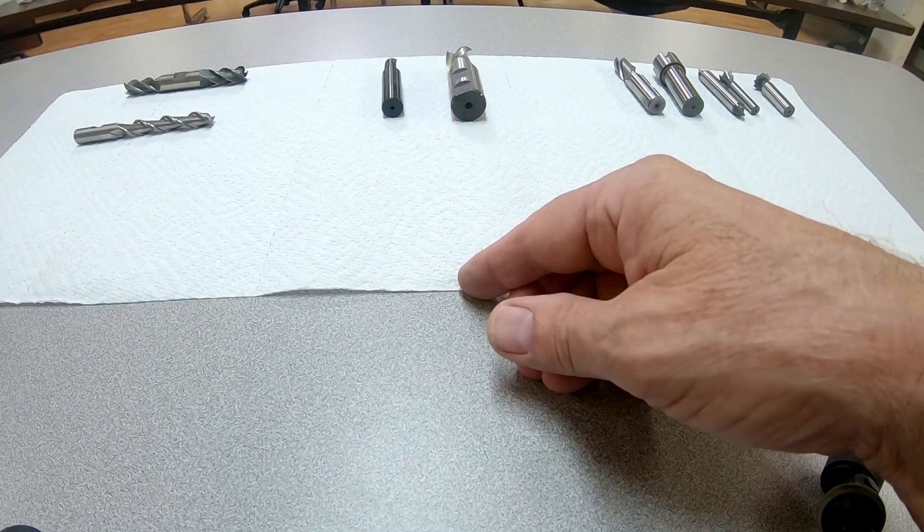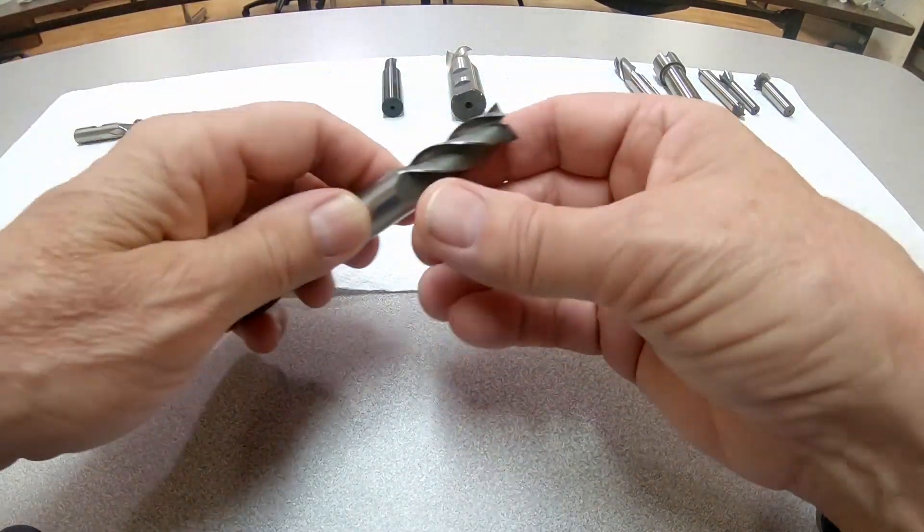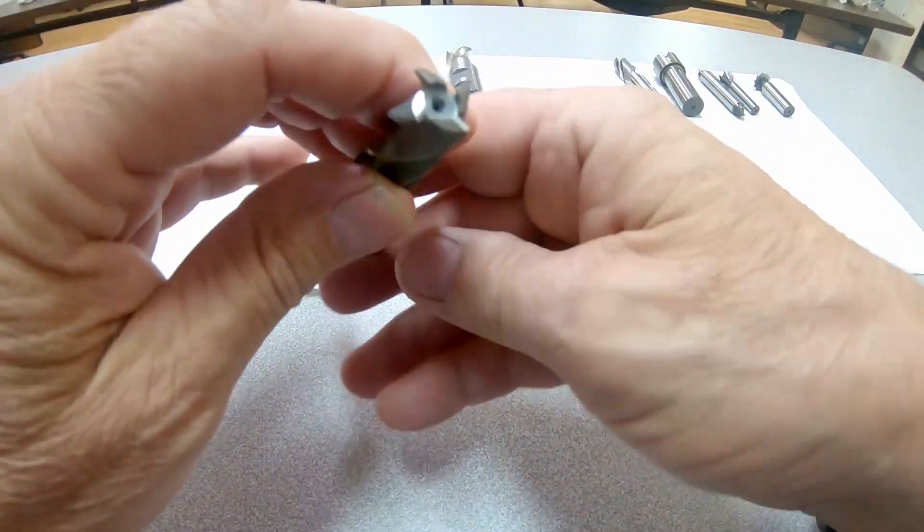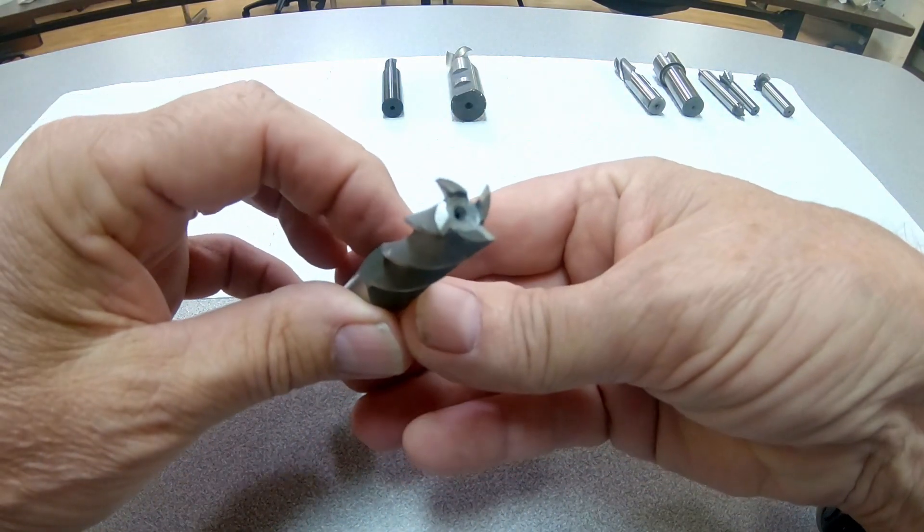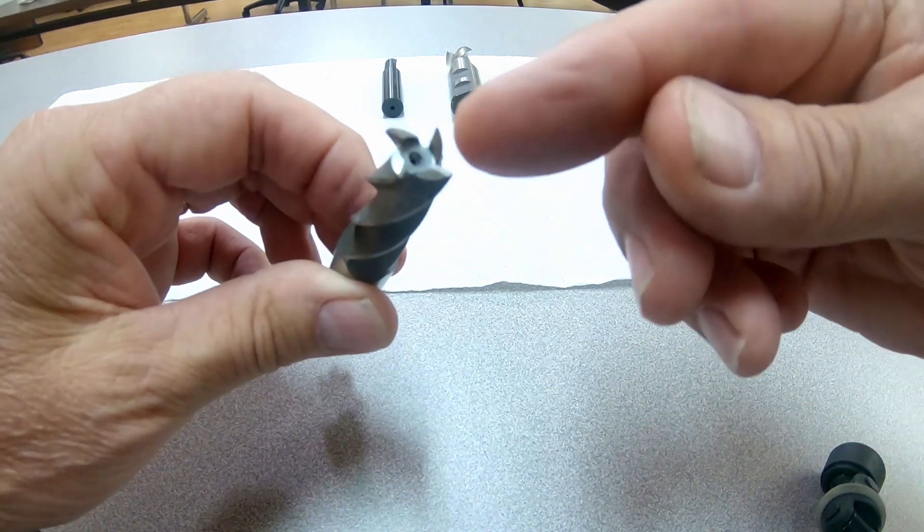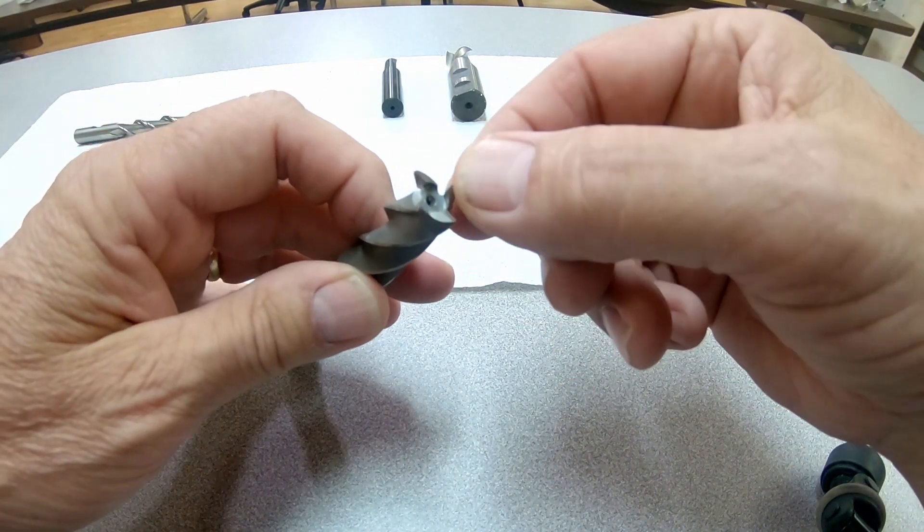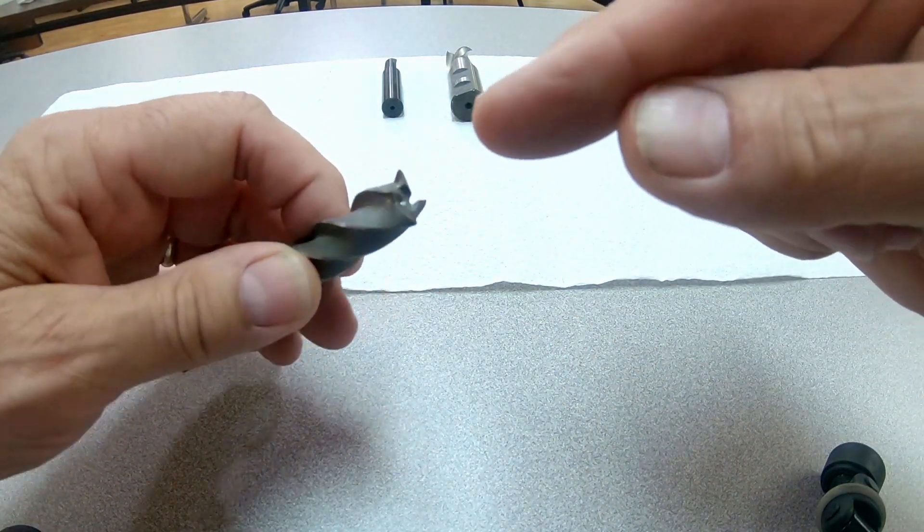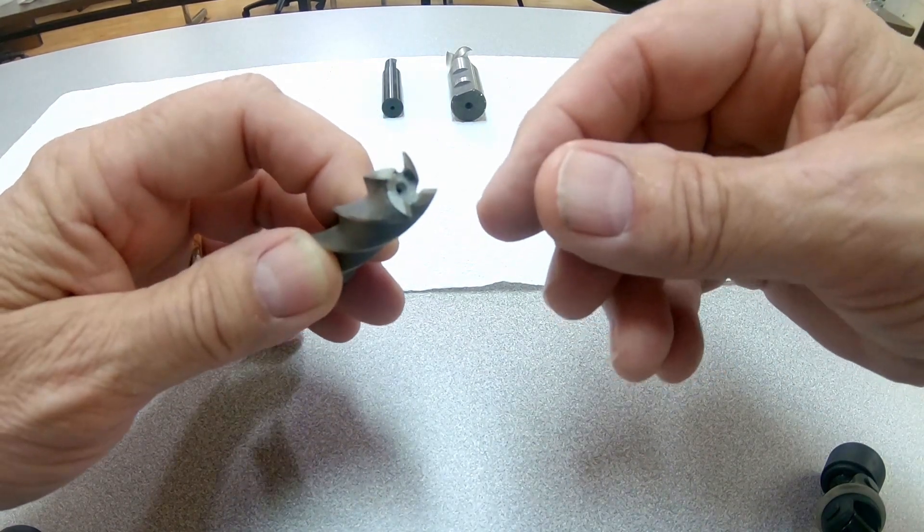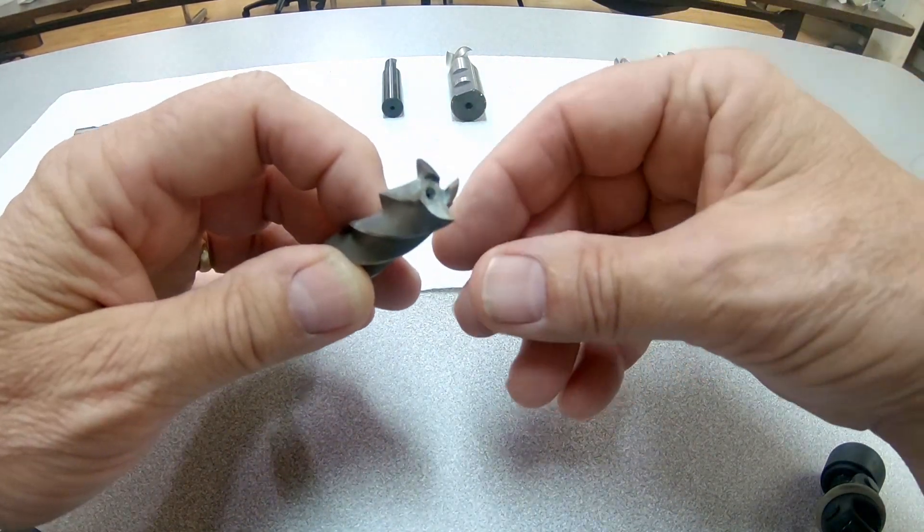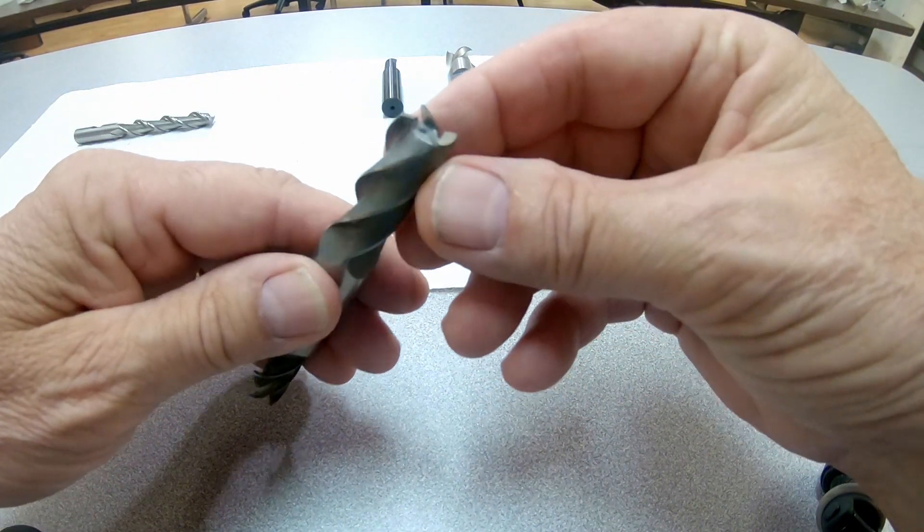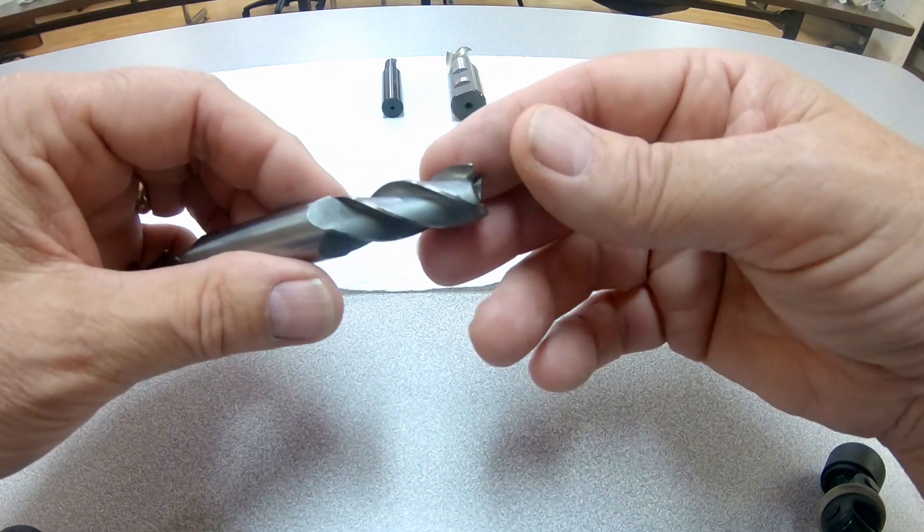A couple other things here. Here's another four-flute. This is not a center cutting. So if you see this kind of thing, don't try to plunge with it, because obviously it's not going to cut on the inside, and it will just come up against a little post that it generates, and that'll stop wherever you're at and probably tend to overheat things.